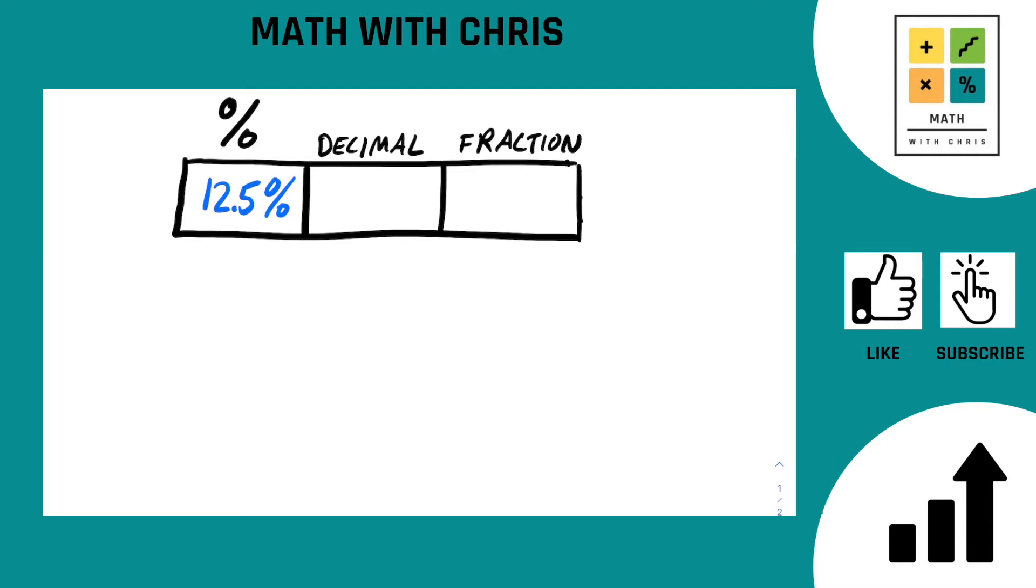Alright, so first the decimal. That's usually going to be the easier one, at least when you're starting with percentages, although not always. But in this case, yes. So we take the number 12.5, and in order to convert it into a decimal, we just move the decimal over two spots. 1, 2.